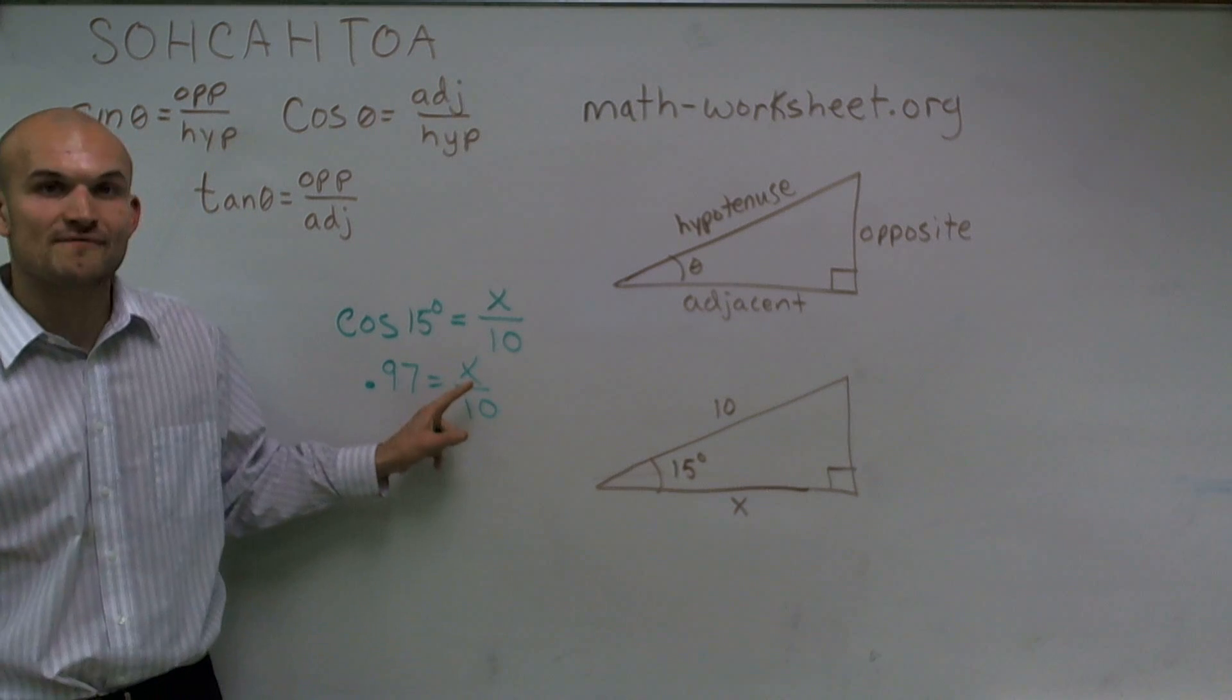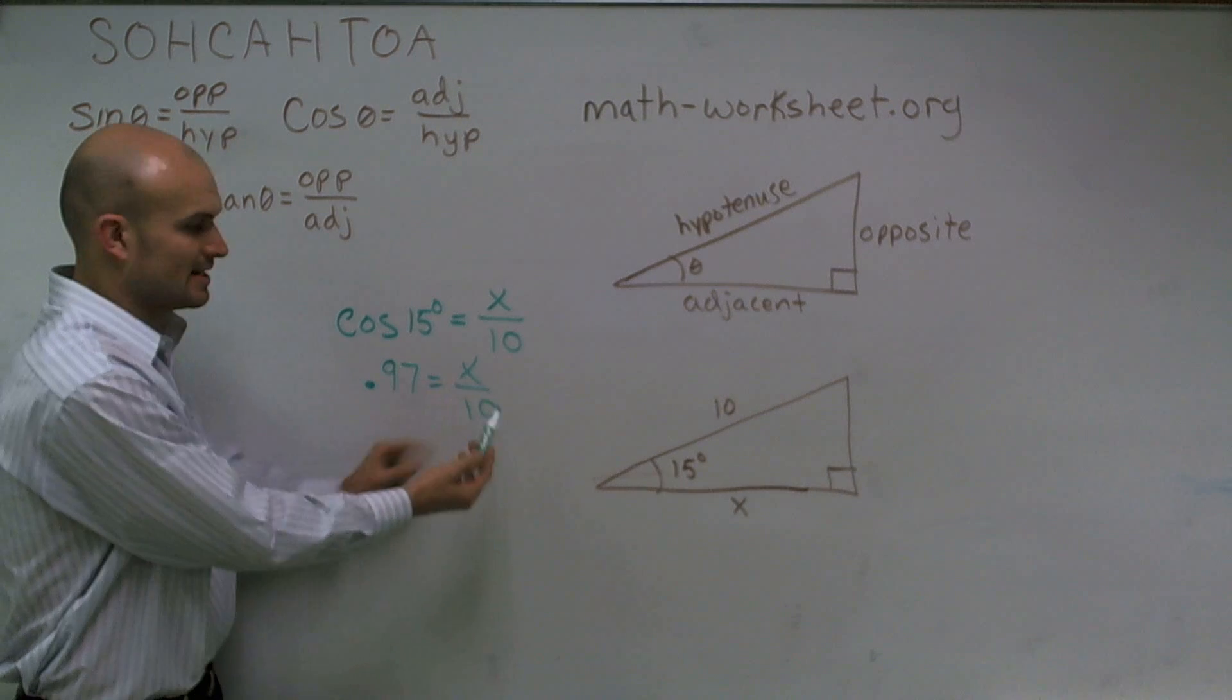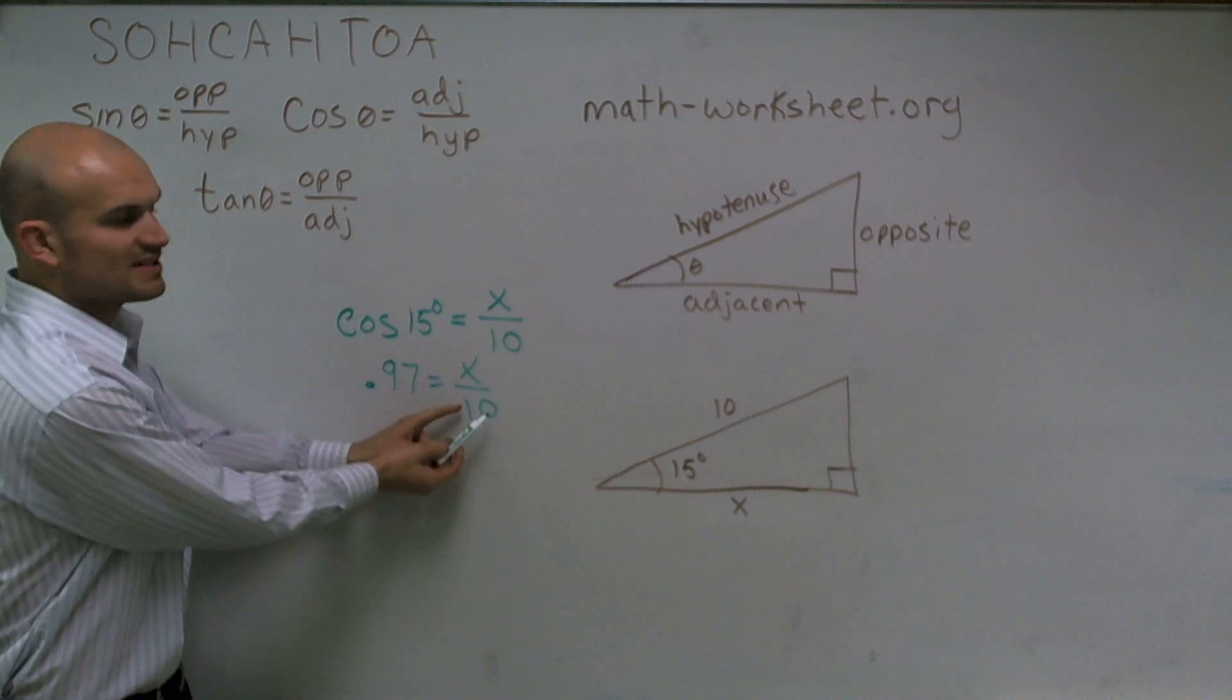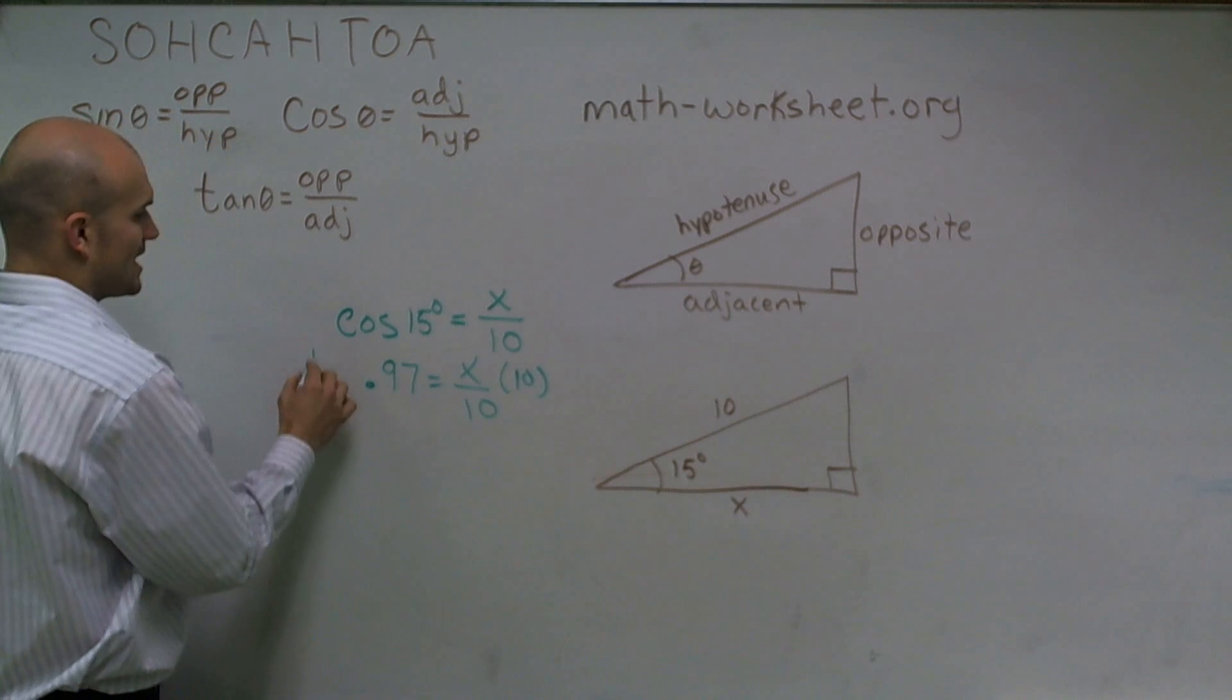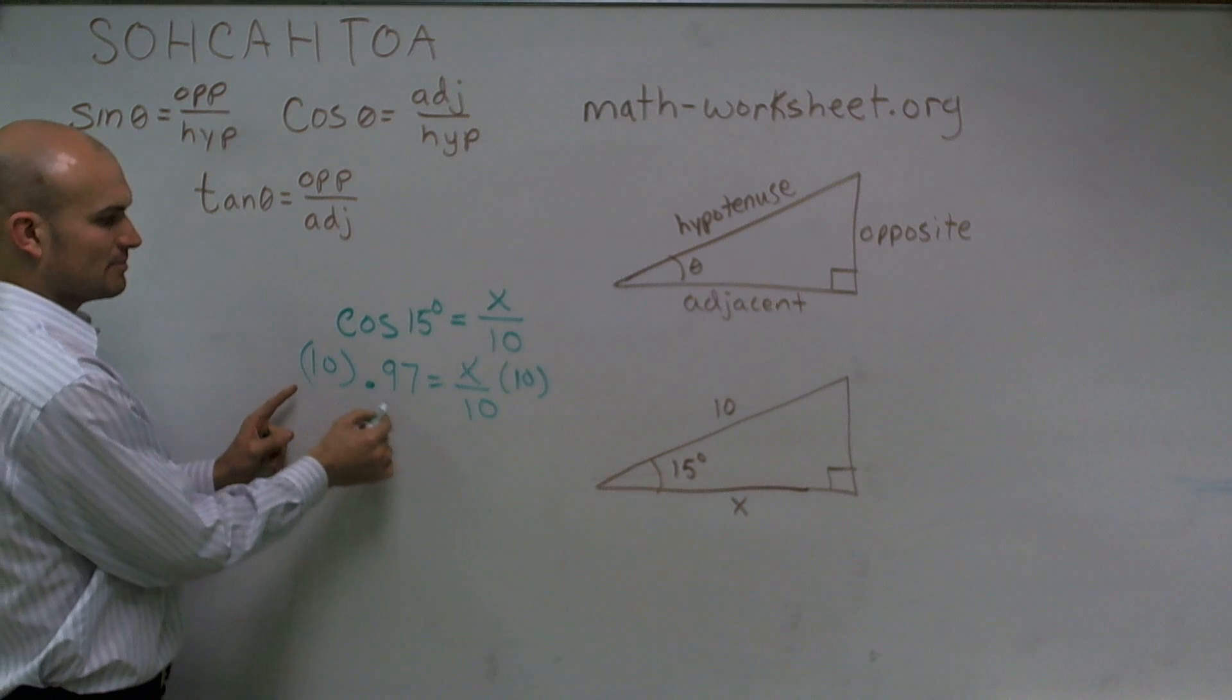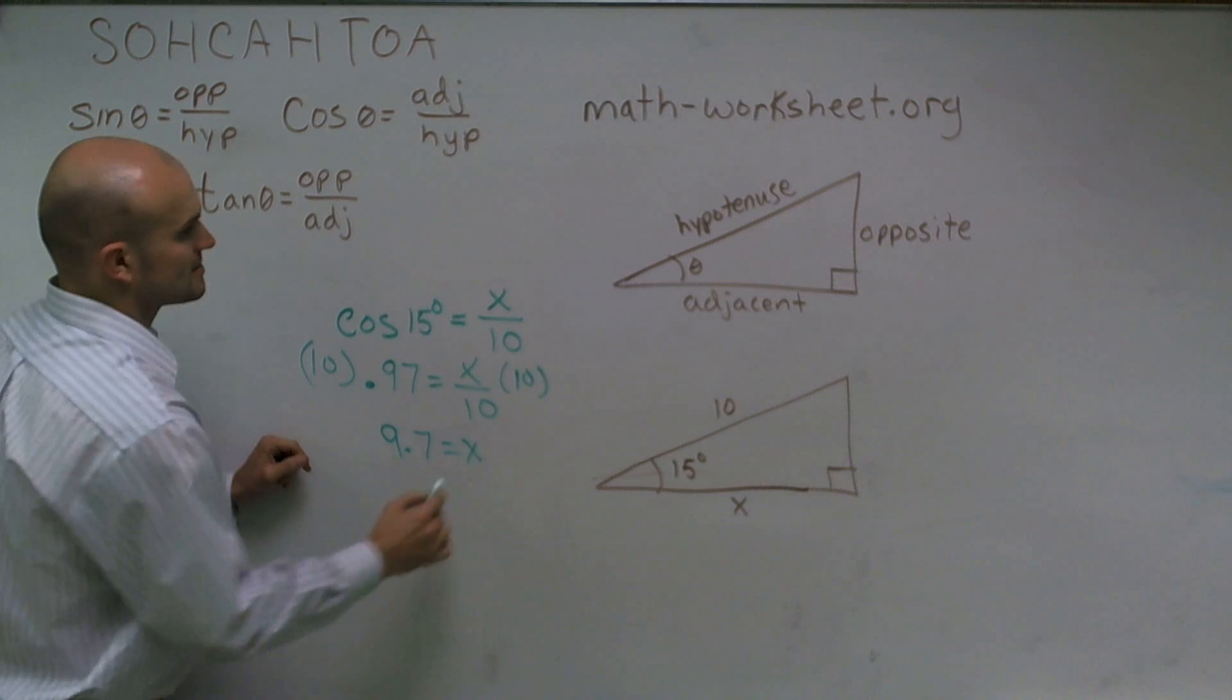So now, to find my value of x, what I need to do is get the x by itself, meaning isolate it. So right now, I have my variable being divided by 10. So to get rid of divided by 10, I simply need to multiply the left and right side by 10. So by multiplying my 10, I'm going to move my decimal one more over. So I have 9.7 equals x.